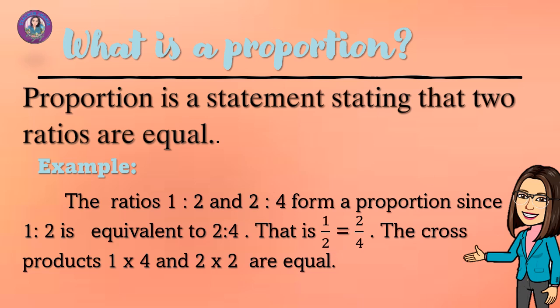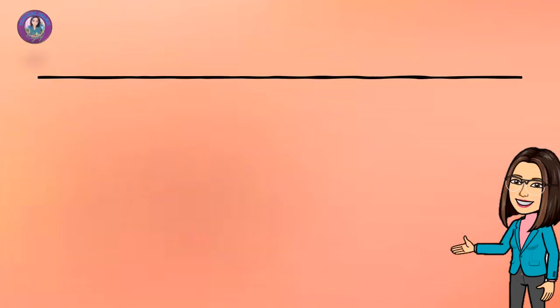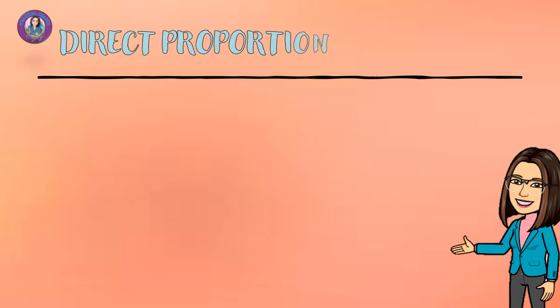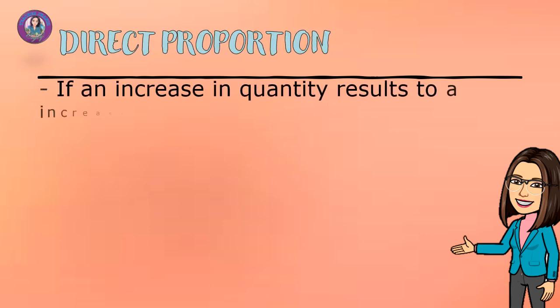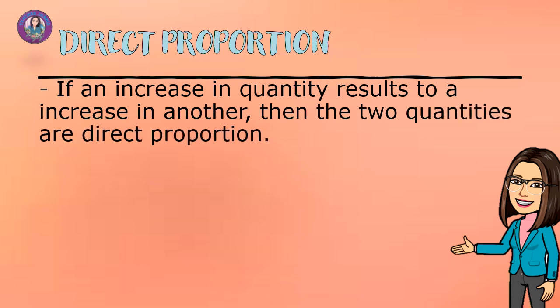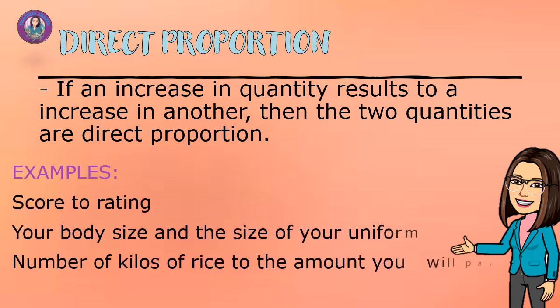Since we already know what a Proportion is, let us go to the 3 kinds of Proportion and Solving Problems. First, let us identify what a Direct Proportion is. If an increase in quantity results in an increase in another, then the two quantities are in Direct Proportion. Examples: score to rating, your body size and the size of your uniform, and number of kilos of rice to the amount you will pay.